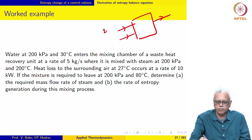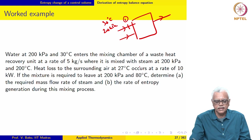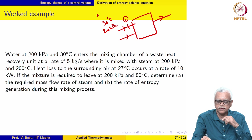Water at 200 kPa and 30 degree Celsius enters the mixing chamber. We label this as state 1, and the mass flow rate is given as 5 kg per second.